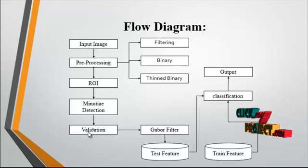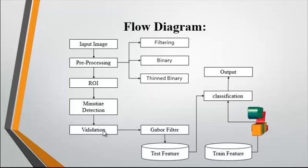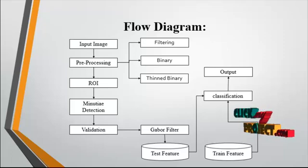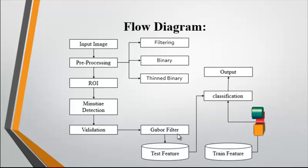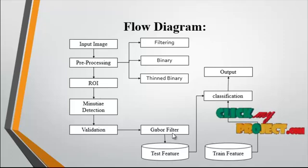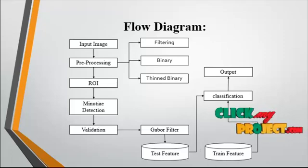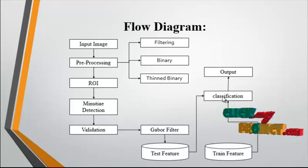After minutiae detection, validation is carried out. Validation is the matching of the fingerprint. The minimum matching point of the minutiae distance is calculated during validation. After validation, the Gabor filter is used for feature extraction. Using the Gabor filter, the test feature is extracted from the image. Then classification is undertaken after feature extraction, using multi-SVM classification.